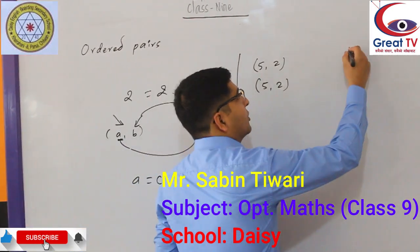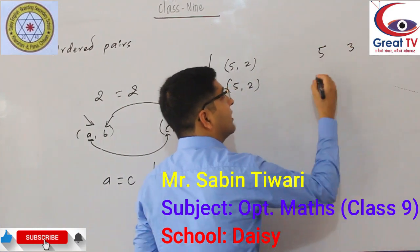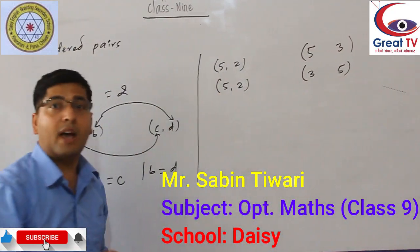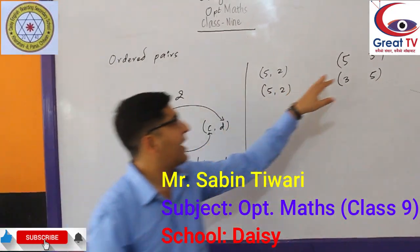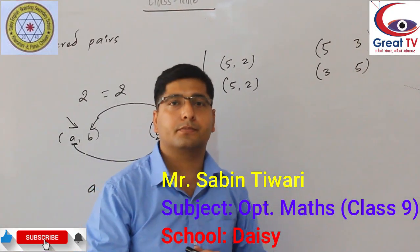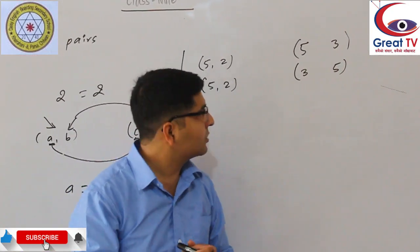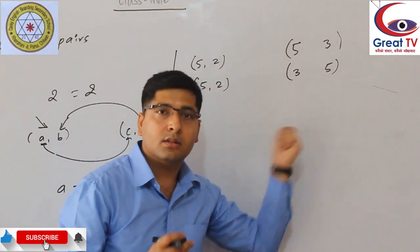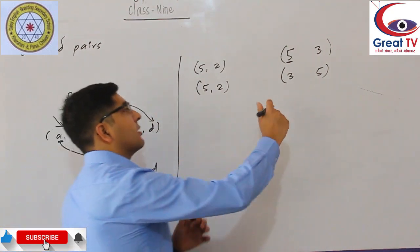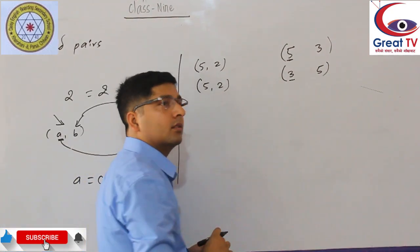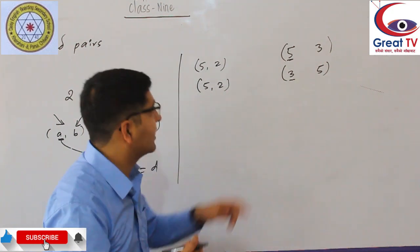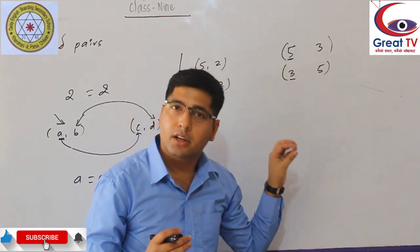Now let's see another example: (5, 3) and (3, 5). The x-component of the first ordered pair is 5, but the x-component of the second ordered pair is 3. And the y-component of the first ordered pair is 3, but the y-component of the second ordered pair is 5. Since 5 does not equal 3, these ordered pairs are not equal.